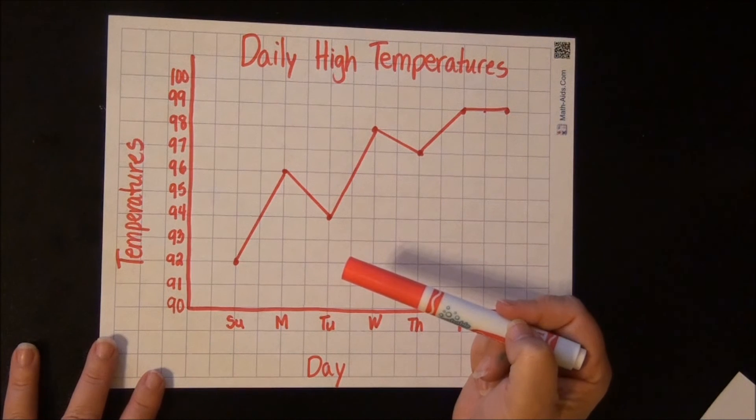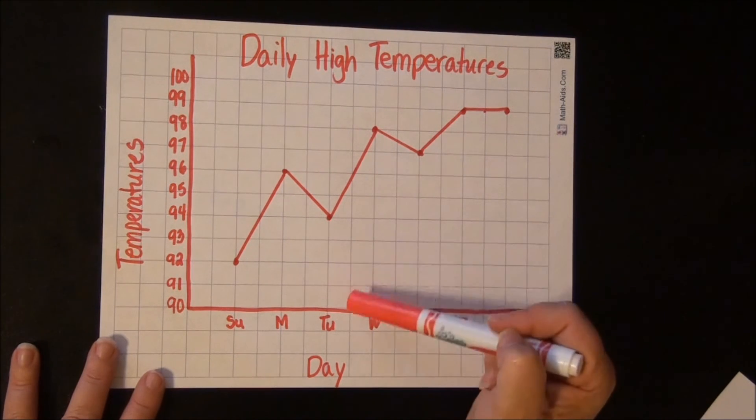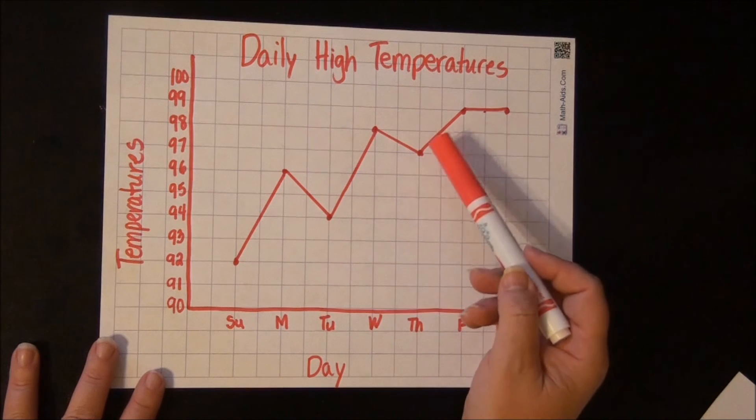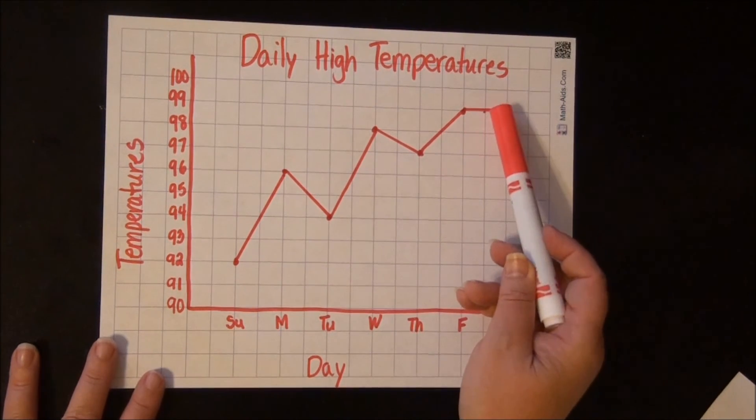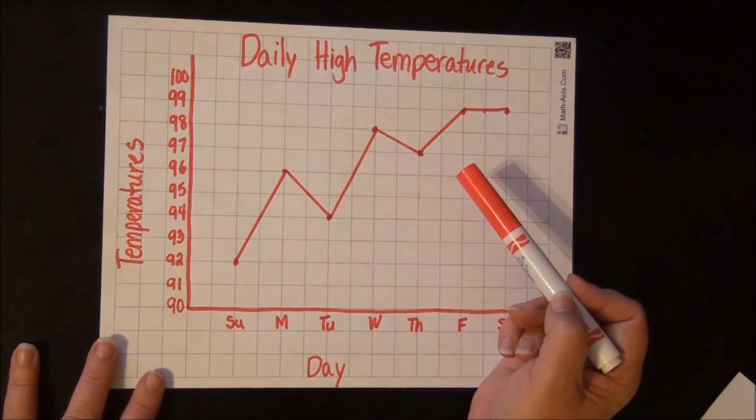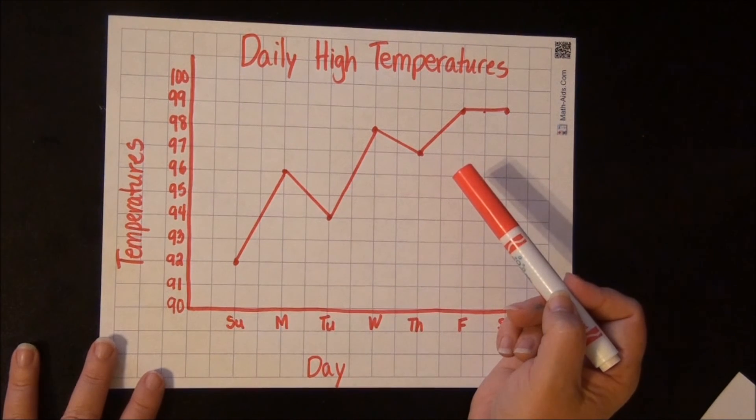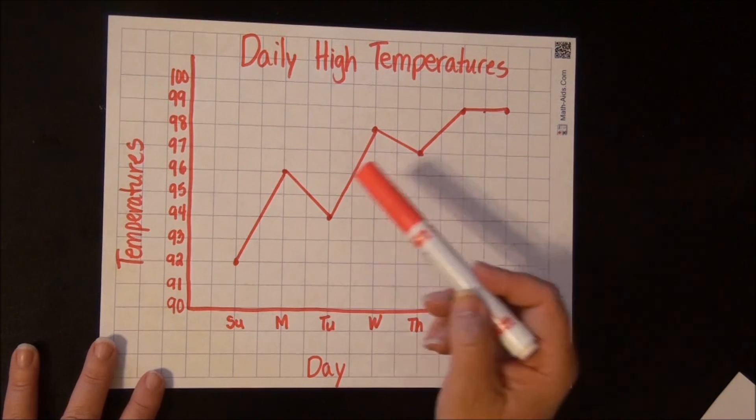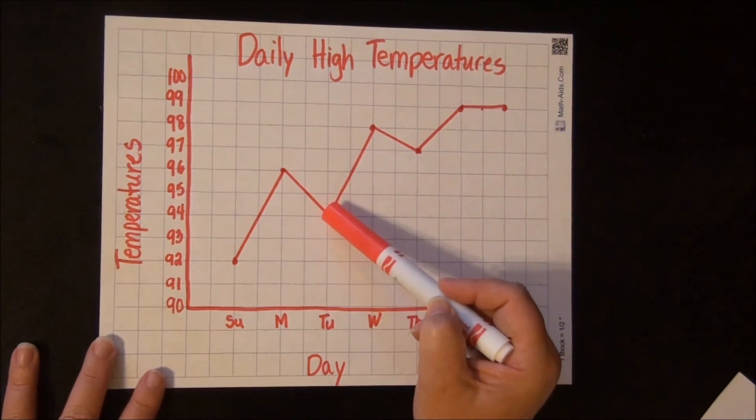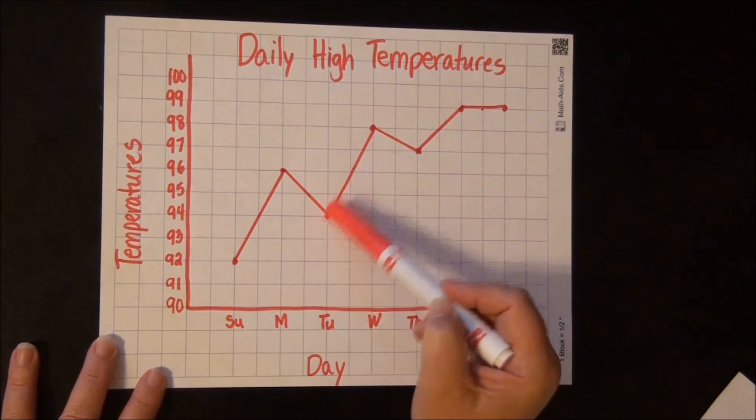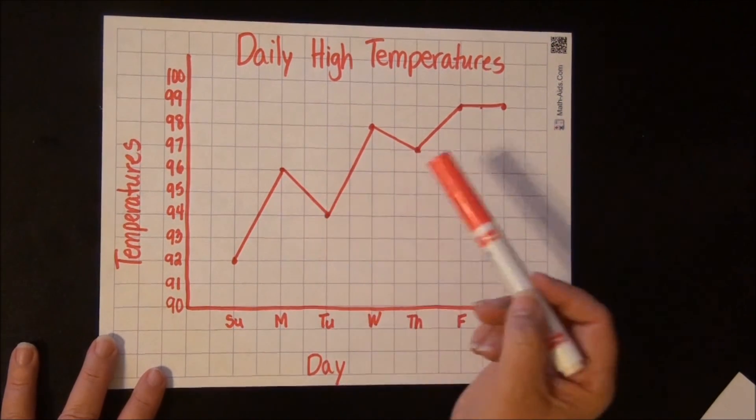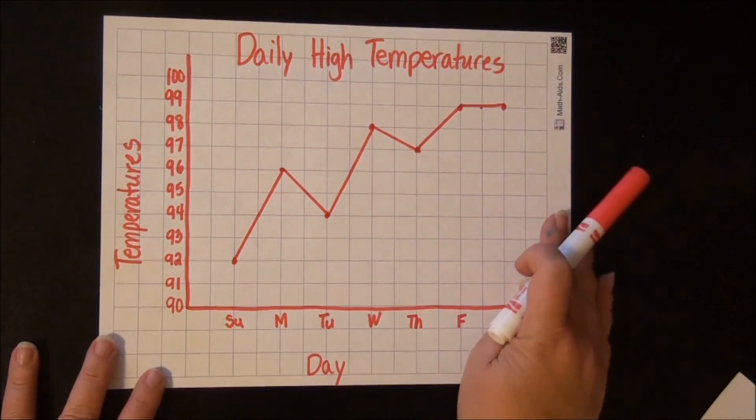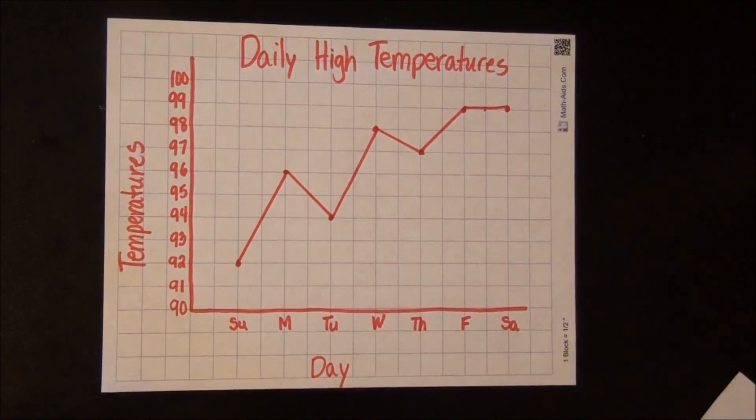What days showed no decrease? That's where the temperature went down in temperature. You could say Thursday, Friday, and Saturday because it increased and stayed the same those days. And you could say, which day showed the biggest decrease in temperature? That would be Monday to Tuesday because it went down farther than this one did. This only went down one degree. This one went down two. So there's lots of information you can show using a line graph.